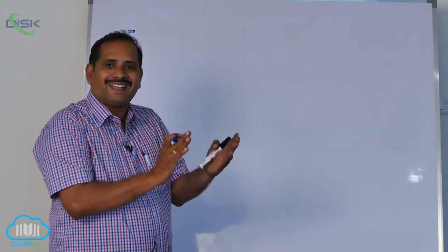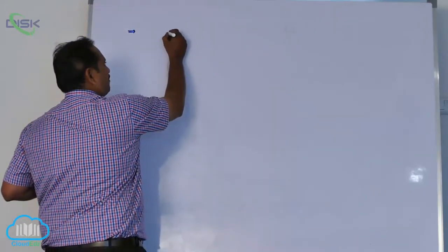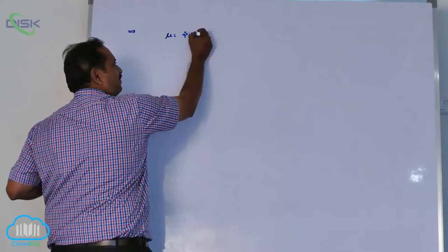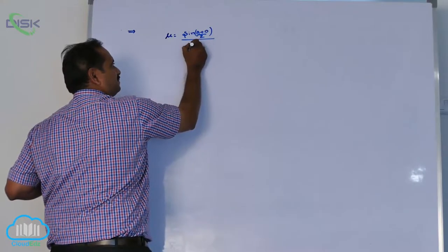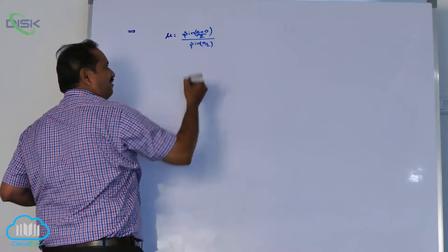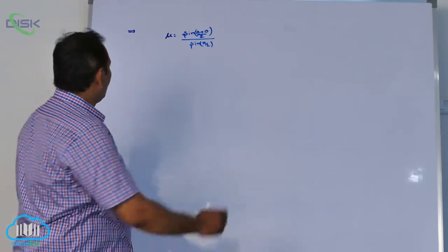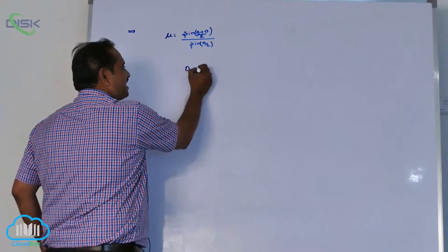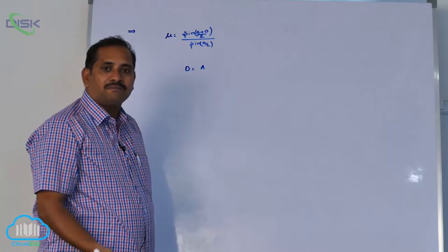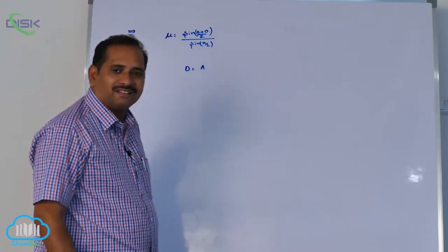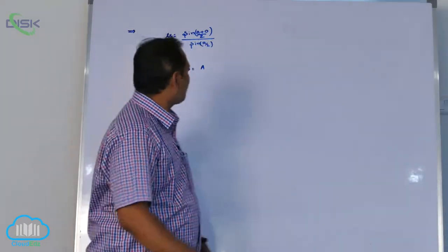First I am attacking with conceptual nature of questions. For example, mu equals sin of (a plus d) by 2 by sin a by 2. Very tricky questions they can give you like this. If minimum deviation equals angle of the prism, then refractive index of the prism is how much? For this, how to approach the problem?